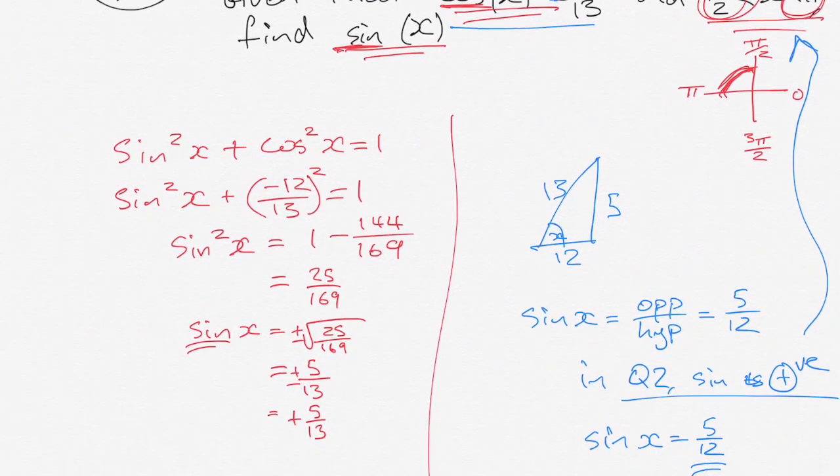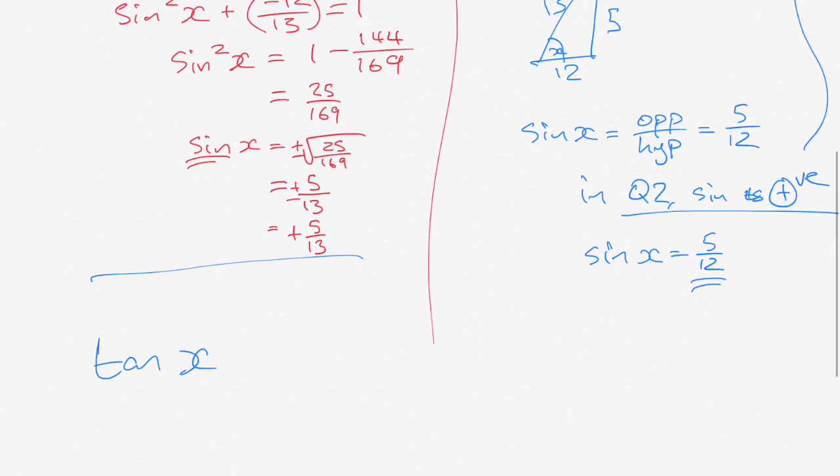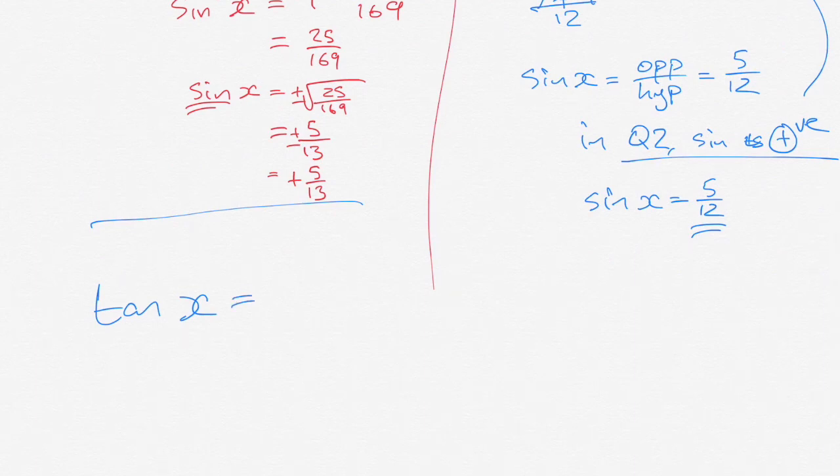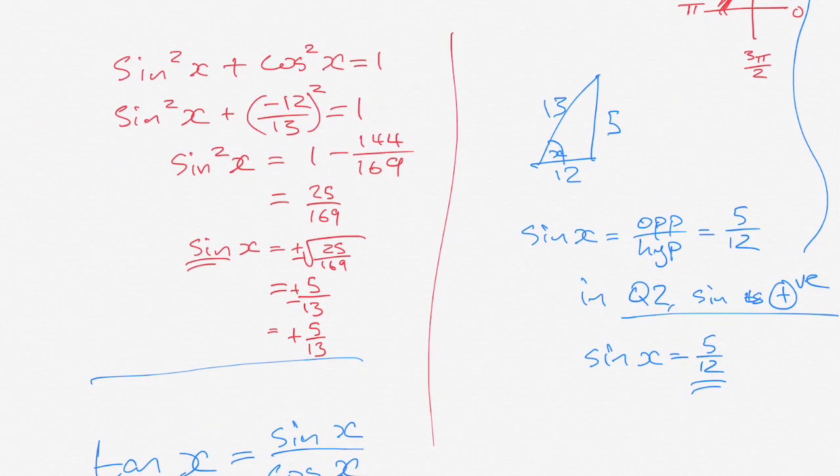Now we could do this algebraic method with tan, remembering also the identity that tan x is equal to sin x over cos x, so that will allow you to calculate tan x given any of the other values. But it should be pointed out that this method here that I showed you works really well for tan x without needing any other complications. So most people tend to find this method with the triangle to be a very simple way of tackling those sorts of questions.